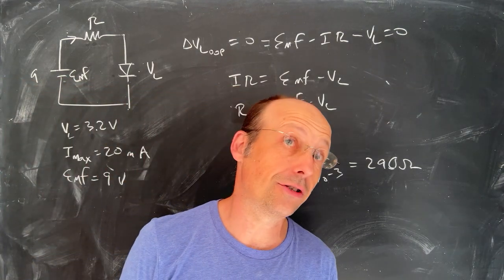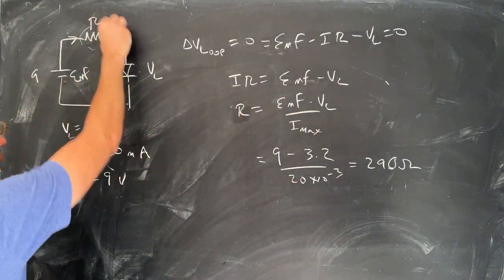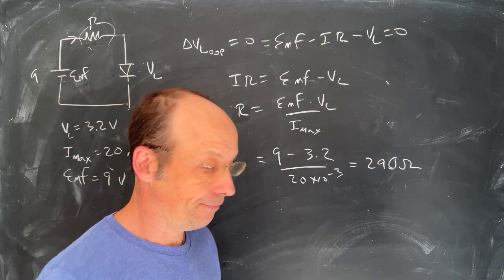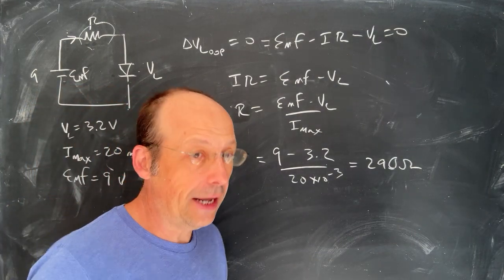So that's what resistor I'd put in series with my 9 volt battery so that my LED would work. Now, yeah, you do lose energy because you lose power over that resistor, but still, it won't break. Okay, next question.